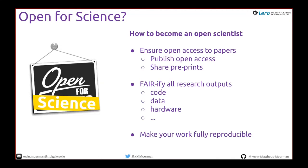So — open for science instead of open for business. How can you become an open scientist? You can publish open access — you might have to pay a fee, but there are other routes, like sharing preprints. You can verify all research outputs using the FAIR principles. You have your code, data, and hardware or other aspects that need to be shared along with your PDF article, and you can make your work fully reproducible.